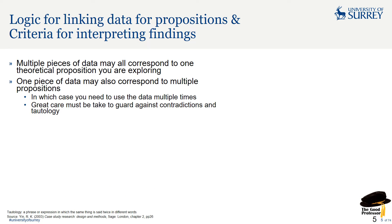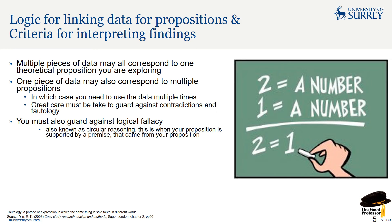So what's the logic for linking the data to propositions? What's the criteria for interpreting findings? Multiple pieces of data may all correspond to one theoretical proposition you're exploring. One piece of data may also correspond to multiple propositions, in which case you're going to have to use that data multiple times. You've got to take great care to guard against contradicting yourself and also tautology — that's using one piece of evidence to support a claim you've made from that same piece of evidence itself.